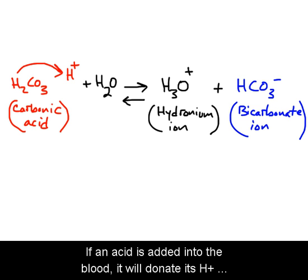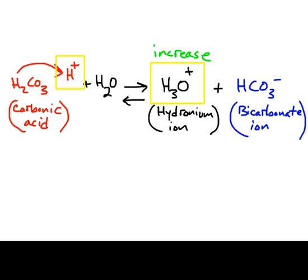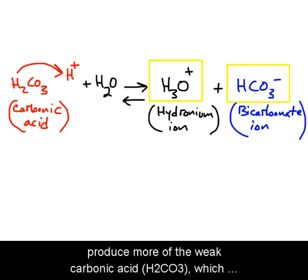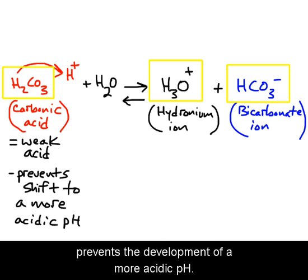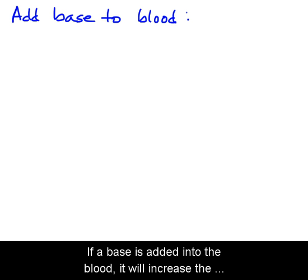If an acid is added into the blood, it will donate its hydrogen ions and the concentration of hydronium ions in the blood will increase. The bicarbonate ions will then react with the hydronium ions to produce more of the weak carbonic acid (H2CO3), which prevents the development of a more acidic pH.